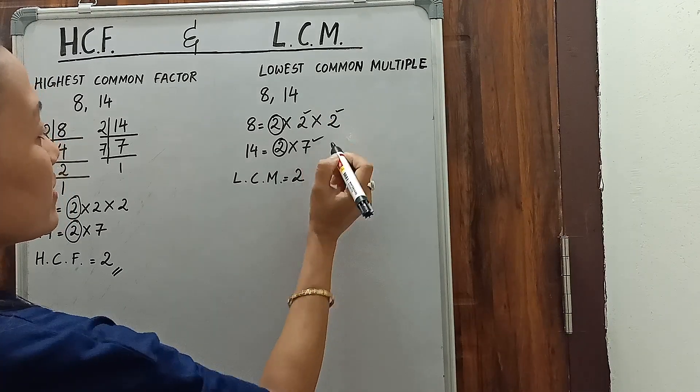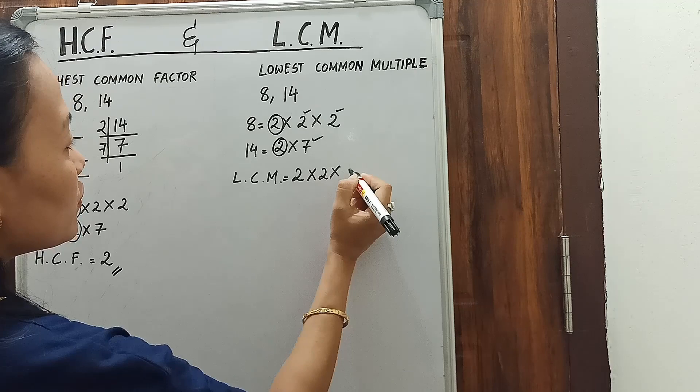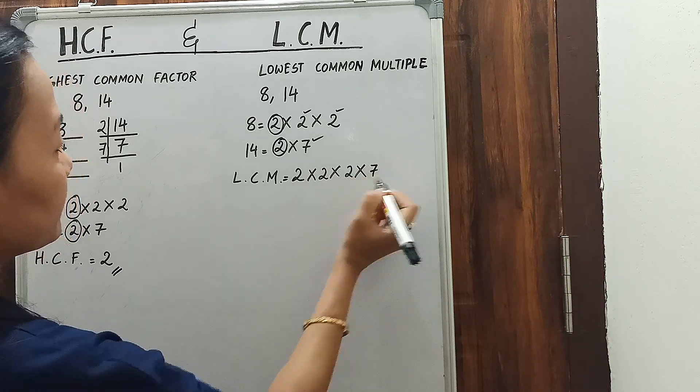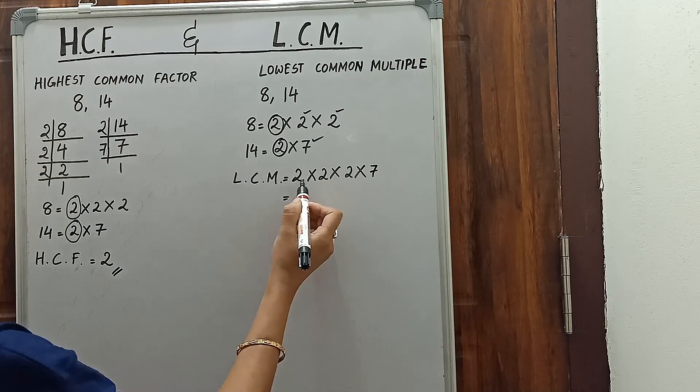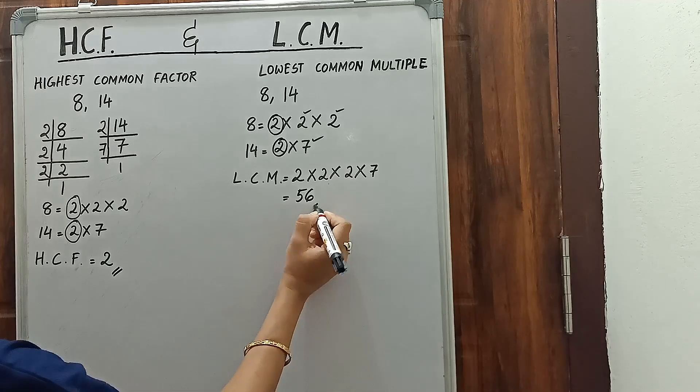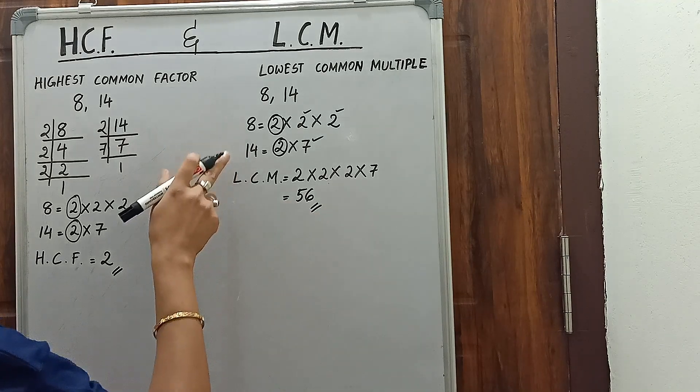2, 2, 2, and 7. 2 into 2 into 2 into 7. So 2 times 2 is 4, 4 times 2 is 8, and 8 times 7 is 56. So 56 is the LCM of 8 and 14.